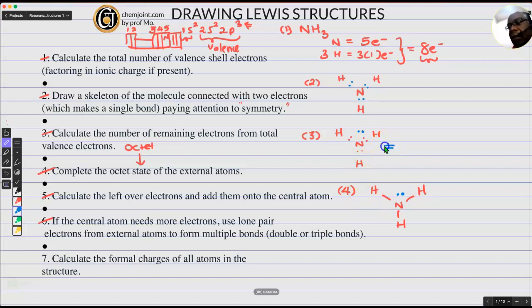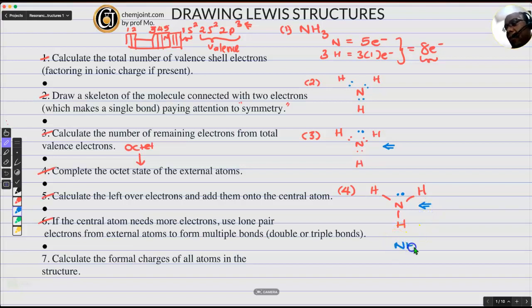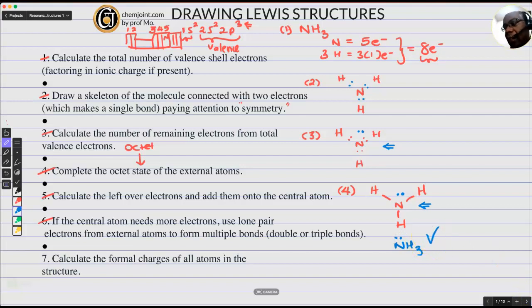So those bonding electrons will be shown as bonds because they are taking part in connecting the two elements, and one lone pair which is not bonded. This is the Lewis structure of NH3, but it's also acceptable to draw it showing the bond and the formula for NH3 will end up having a lone pair on nitrogen. Let's do another one.